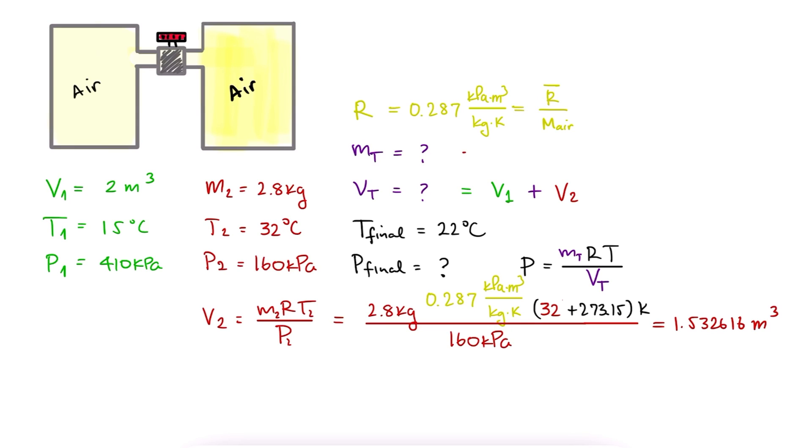The total mass will be the mass of the second tank, which we have, plus the mass of the first tank. We can find the mass of the first tank with the ideal gas equation one more time. M is equal to PV over RT, and again temperature in Kelvin.